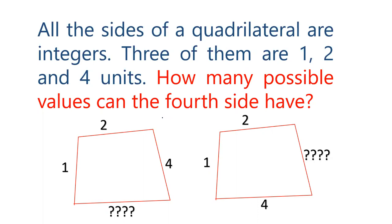The question is that all the sides of a quadrilateral are integers, and three of them are 1, 2, and 4. What can be the possible value of the fourth? How many such values are possible? There is no order of 1, 2, and 4.